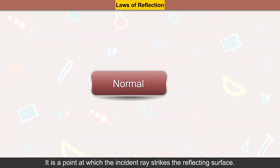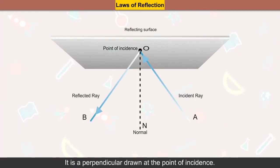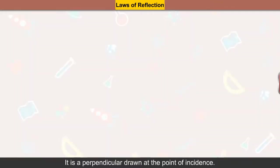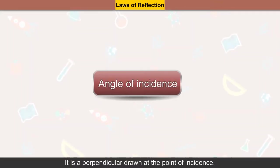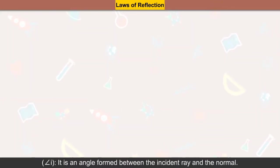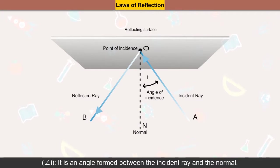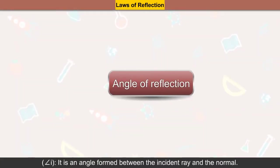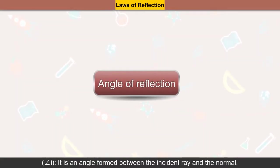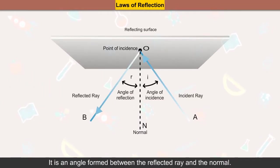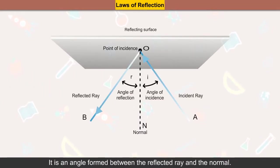Normal — it is a perpendicular drawn at the point of incidence. Angle of incidence — it is the angle formed between the incident ray and the normal. Angle of reflection — it is the angle formed between the reflected ray and the normal.